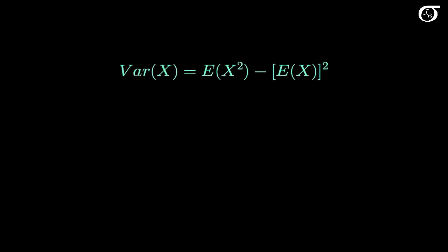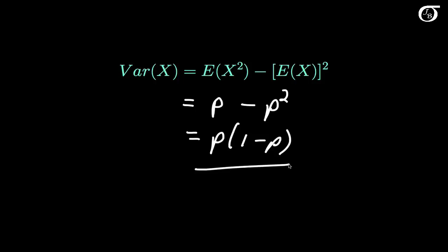The variance of x is equal to the expectation of the square of x, minus the square of the expectation of x. For a Bernoulli random variable, the expectation of x squared is p, and the expectation of x is also p, so we subtract off p squared. If we factor out a p, we get p times (1 minus p). And that is the variance of a Bernoulli random variable.